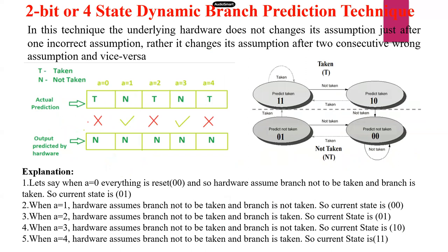In this technique, the underlying hardware does not change its assumption just after one incorrect assumption. In the previous example, after one incorrect assumption, the control would switch over. But here it does not change its assumption just after one incorrect assumption — rather it changes its assumption after two consecutive wrong assumptions, and vice versa. So when we get two consecutive wrong assumptions, then automatically the control will be transferred to some other state.